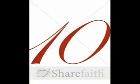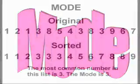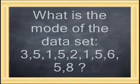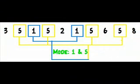Now we move on to the mode. The mode is the number, or numbers, that repeat itself, or the most frequent number. So the mode of this data set would be both 1 and 5.